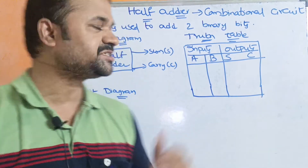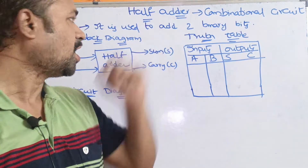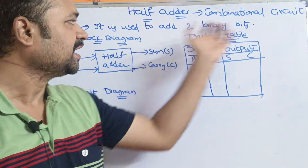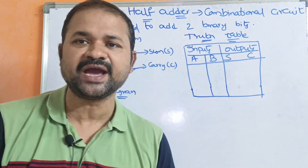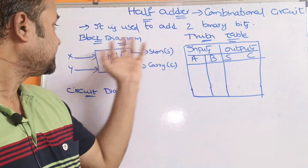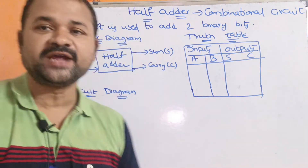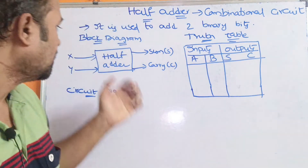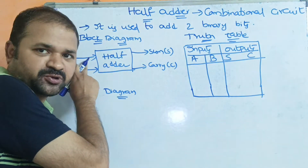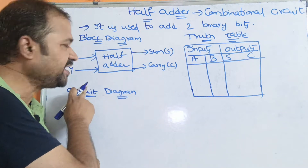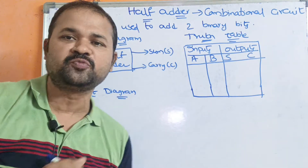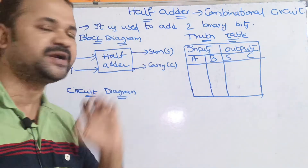Let us discuss about the half adder. The half adder is mainly useful in order to add two binary bits. Let us see the block diagram of the half adder. The half adder accepts two inputs, x and y, and it produces two outputs: sum and carry.